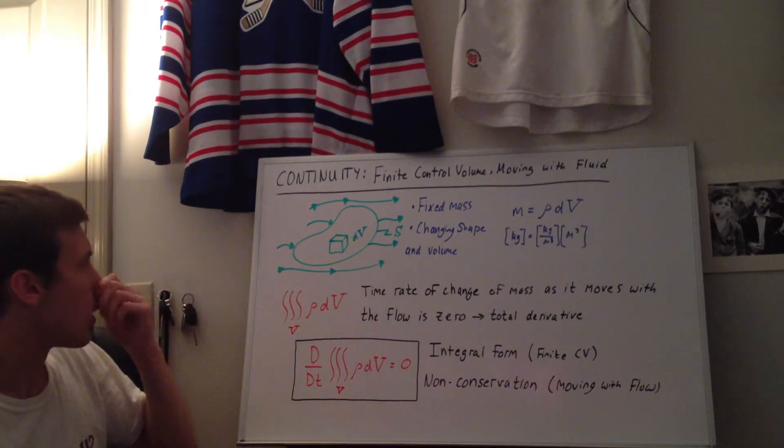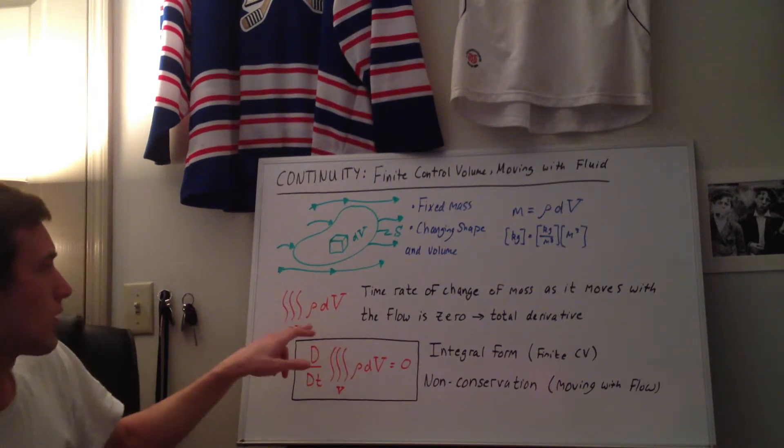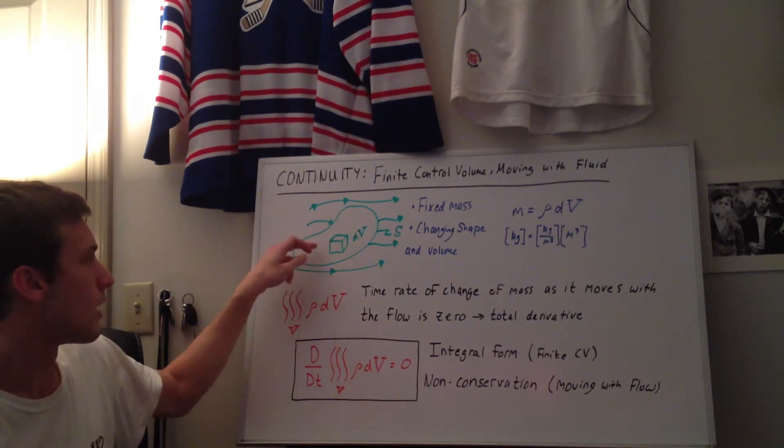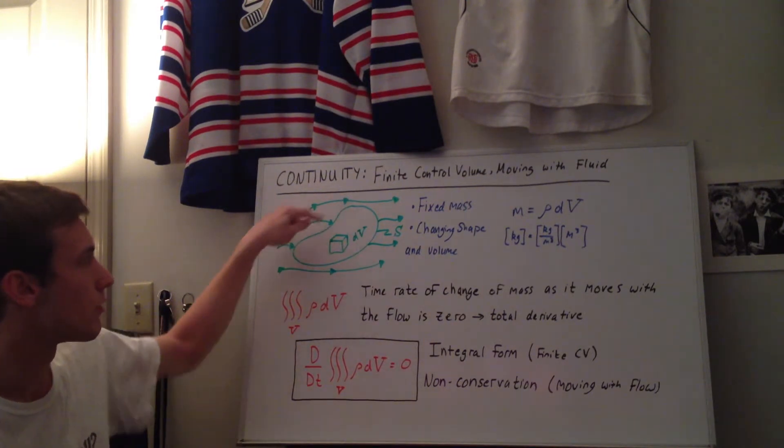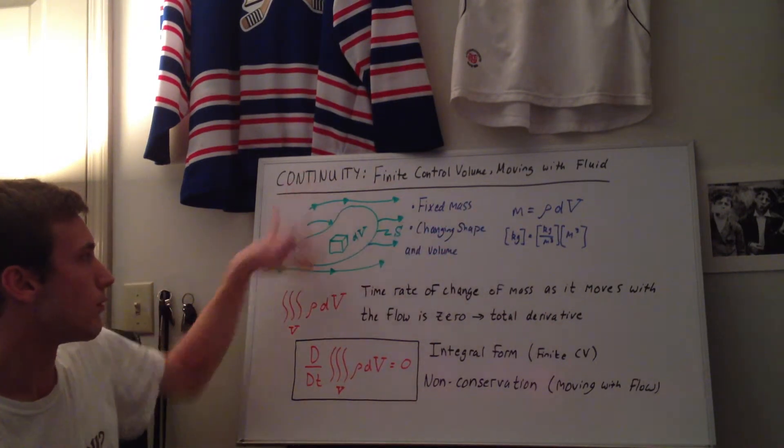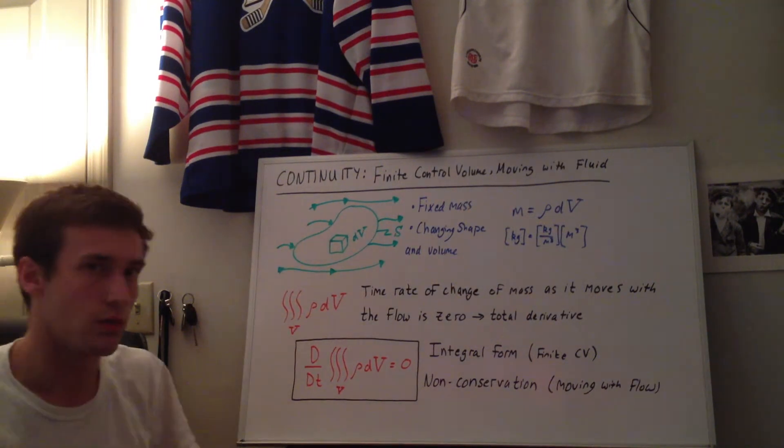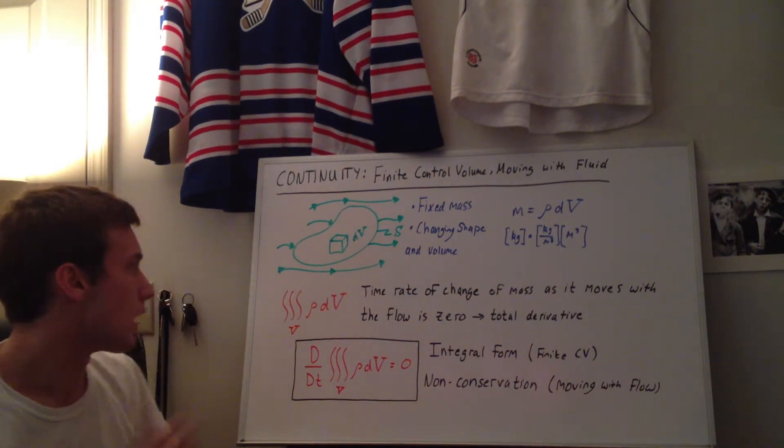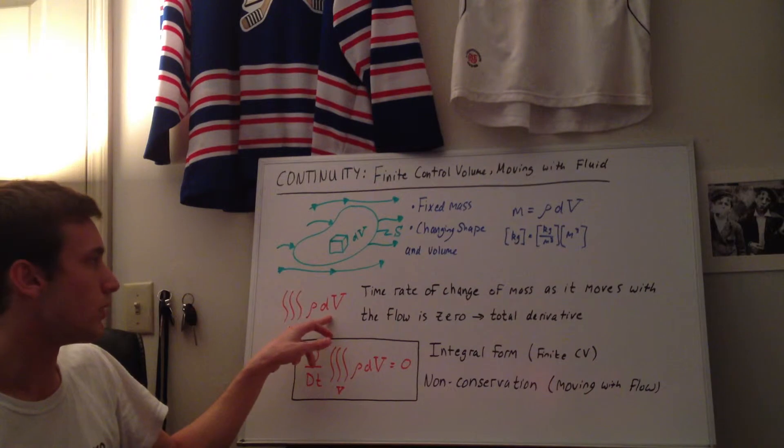Okay, before we move on then, so to get the mass inside this finite control volume, we want to take this mass, little fluid element mass, right here, and we want to integrate it over the entire control volume. So we take this triple integral, because it's a volume, so we take the triple integral over the volume of the mass, which is rho dv.